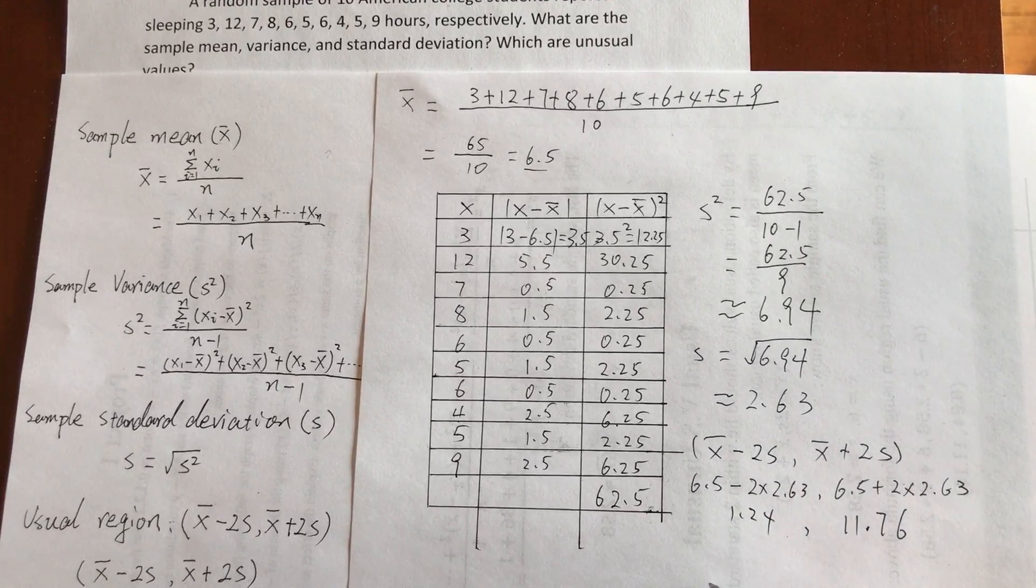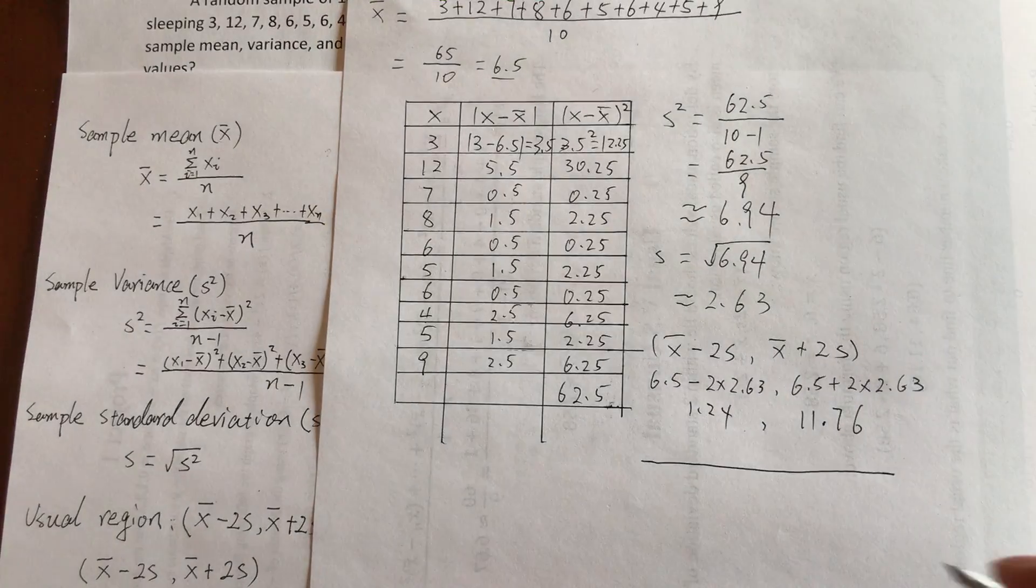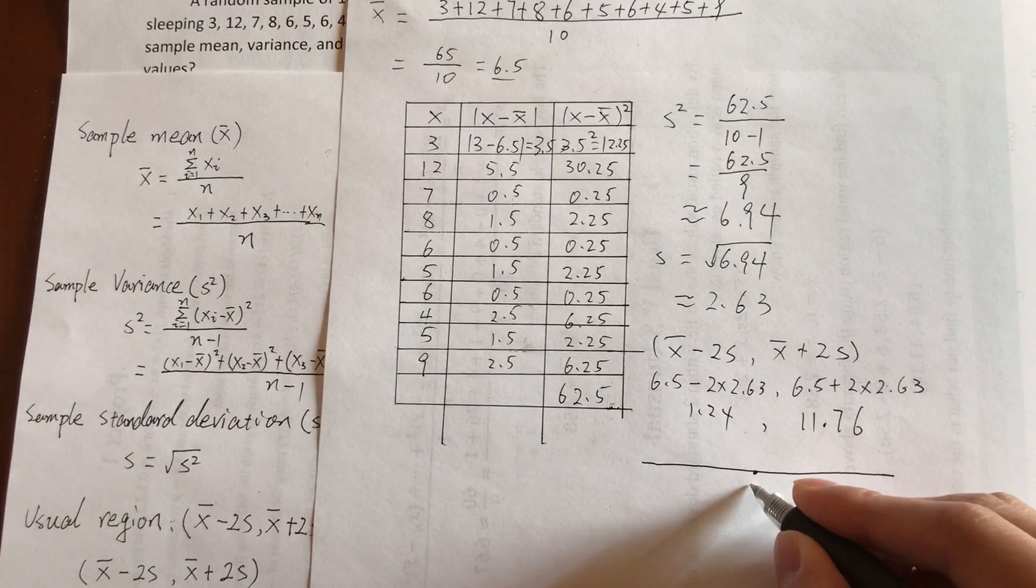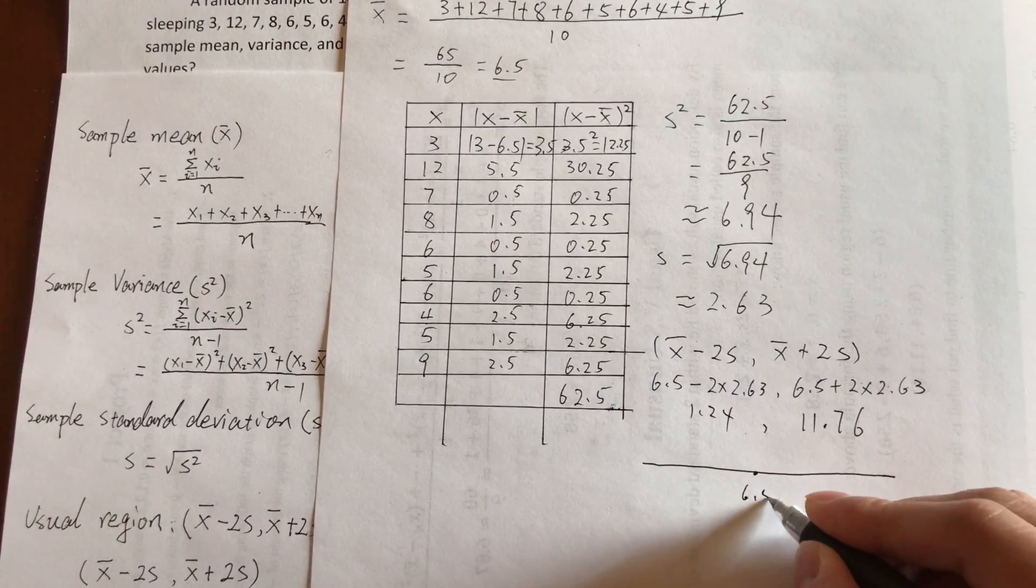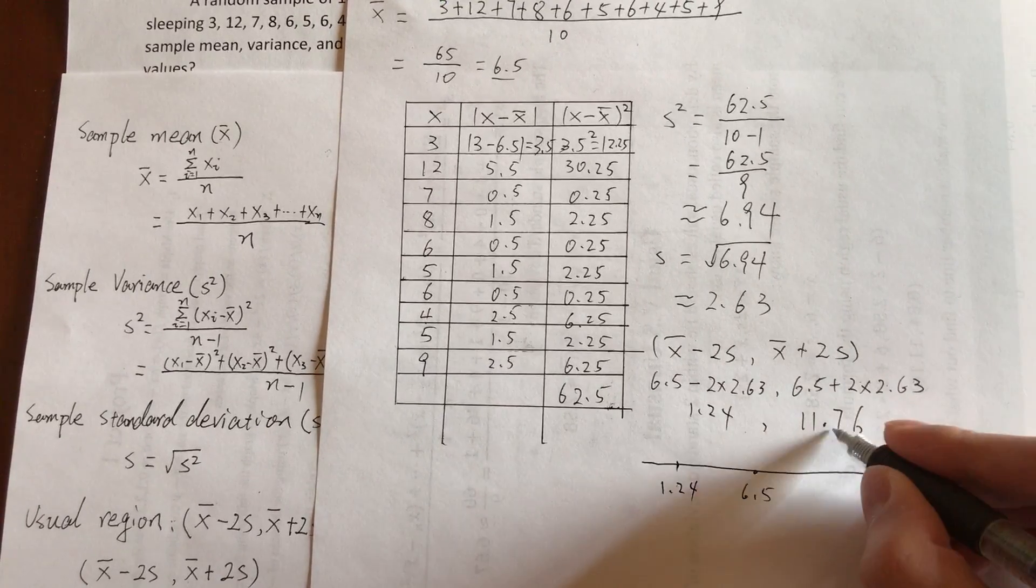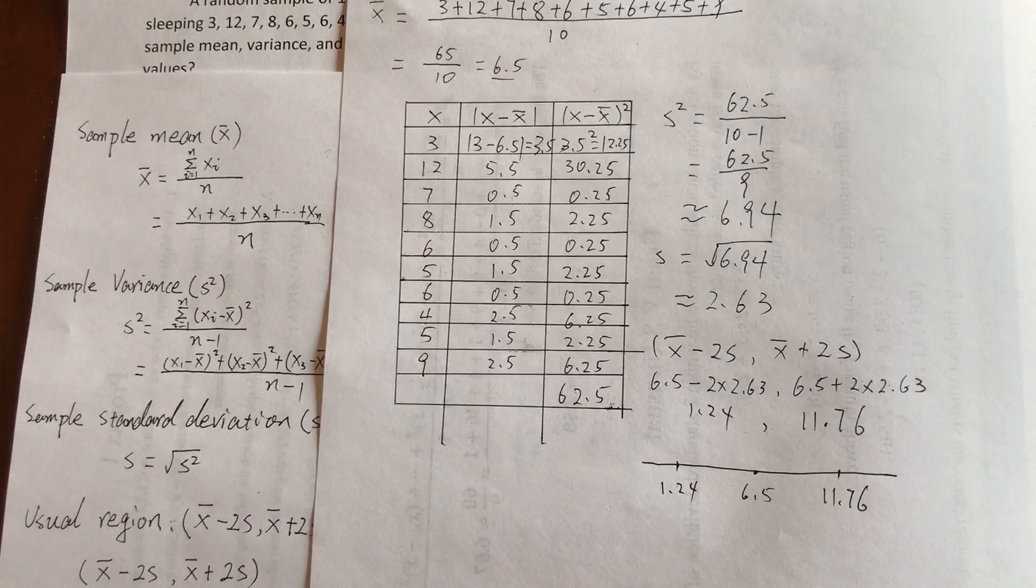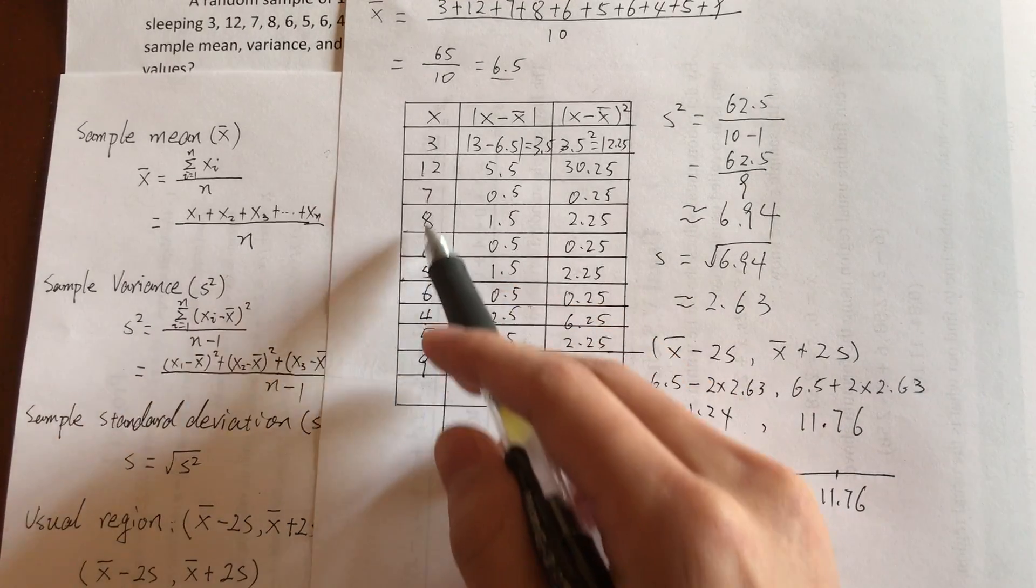Now we create the number line. This is the mean in the middle, 6.5. This is the number here. This is the last number. According to this value, this is the usual region.